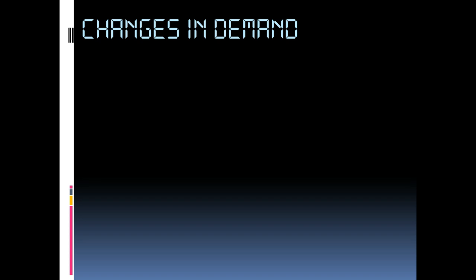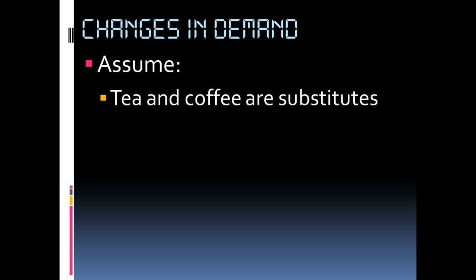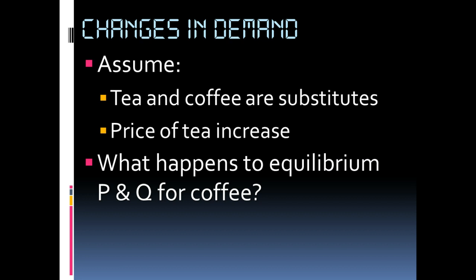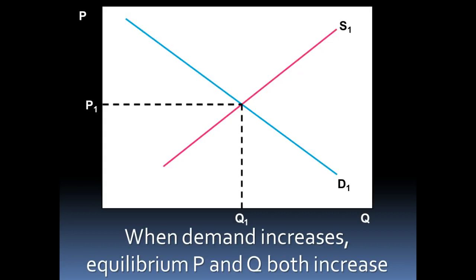The first thing to keep in mind is changes in demand — a change in demand means the entire curve has shifted. Let's assume that tea and coffee are substitutes and the price of tea has increased. If tea increases in price, people will shift out of tea and into coffee, wanting more coffee regardless of price. So we'd expect the demand curve for coffee to shift to the right.